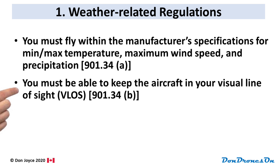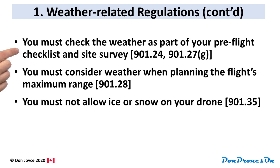That really gets into flying into fog or clouds — you can't do those. Weather is also tied into preflight checks and planning. You must check the weather as part of your preflight checklist and site survey. That's touched on in 901.24 and 901.27, Section G. Also, you must consider weather when planning the flight's maximum range. That's 901.28.